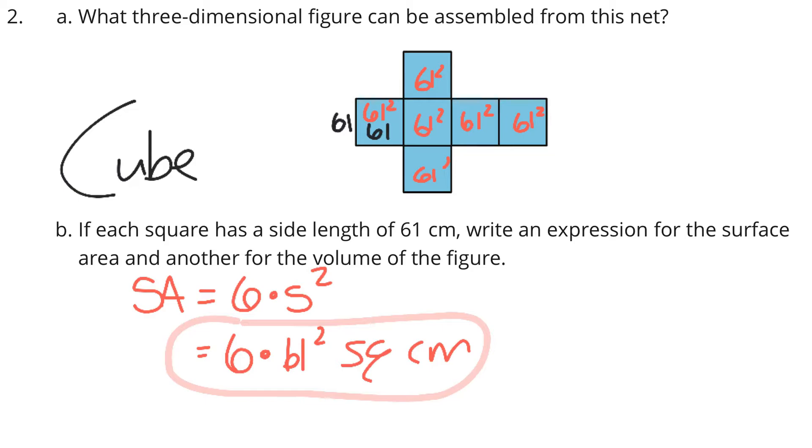And you could just write 6 times 61 squared square centimeters. Now, I wouldn't fault you if you continued going here. Again, we're looking for 6 times 61 squared square centimeters. But if you did simplify this, you would end up with 6 times 3,721, which is 22,326 square centimeters. But again, we're looking for the 6 times 61 squared square centimeters for our answer.